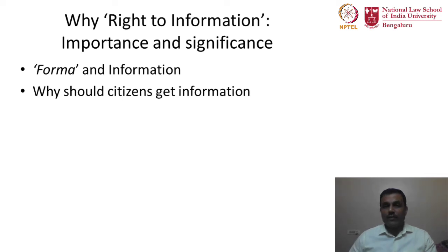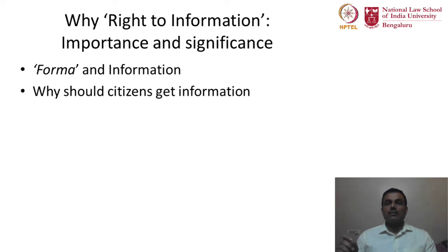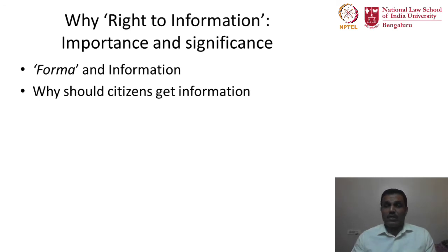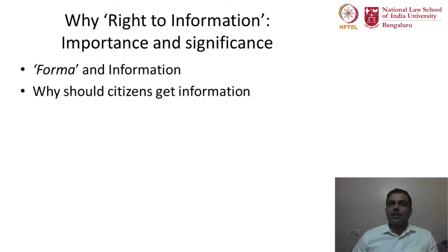The next point: why should we have information? It is particularly relevant and important when looking at citizens' participation in governance. If the government has to function in a public participatory manner — where the public are involved in governance, which is what democracy is all about — then if public participation has to be effective, citizens should have the right to information. How will the public participate in governance unless they are fed with the requisite information? When the government undertakes public consultation, it is important to first share this information and then get ideas and suggestions from citizens. To improve public participation in governance, citizens should get information.